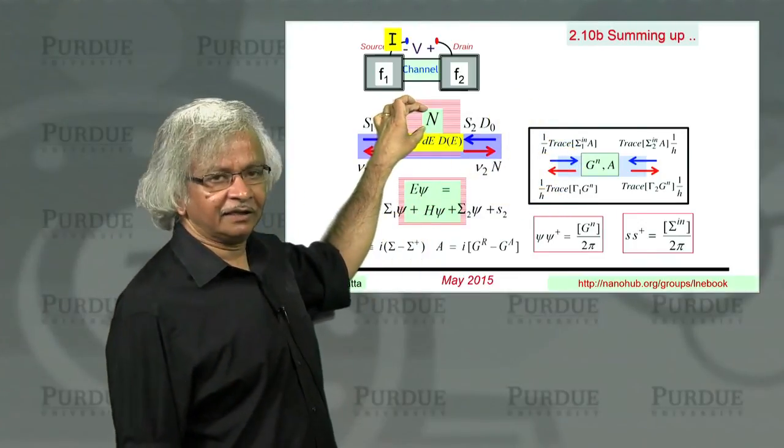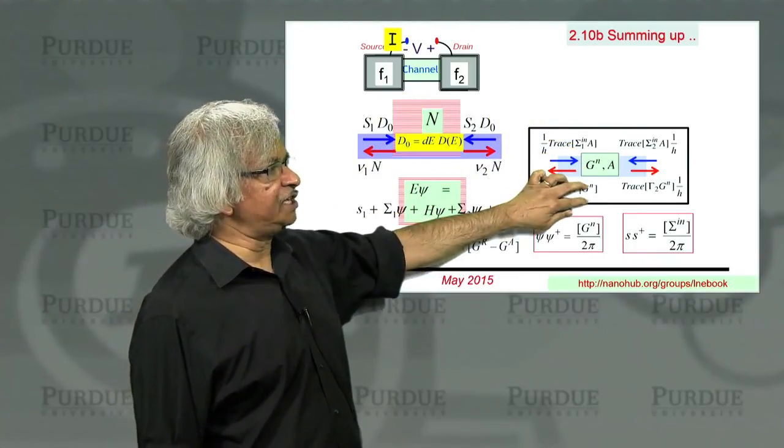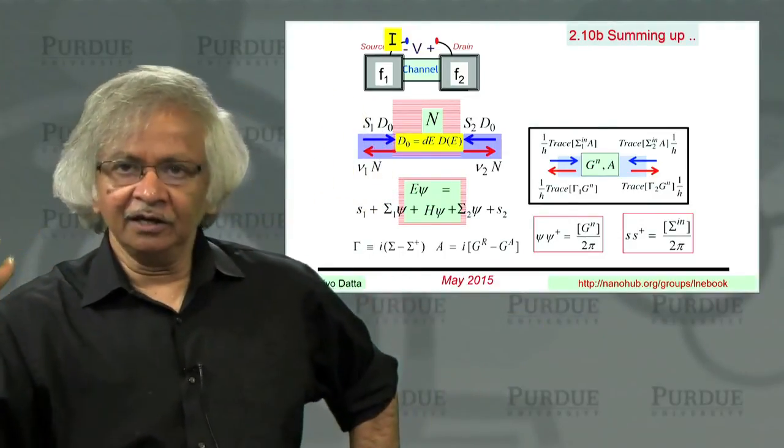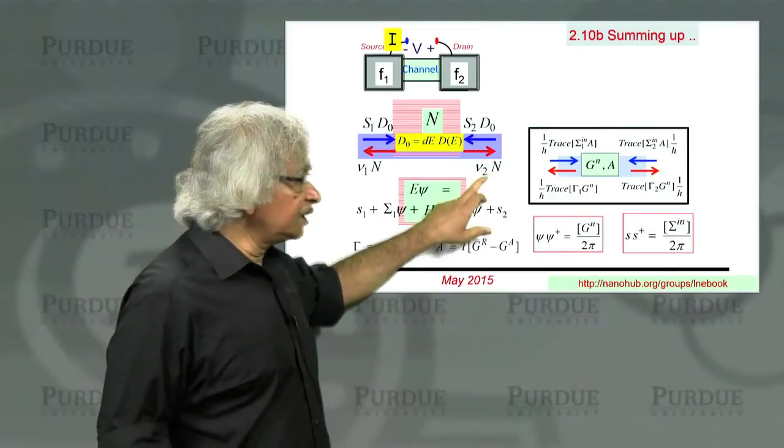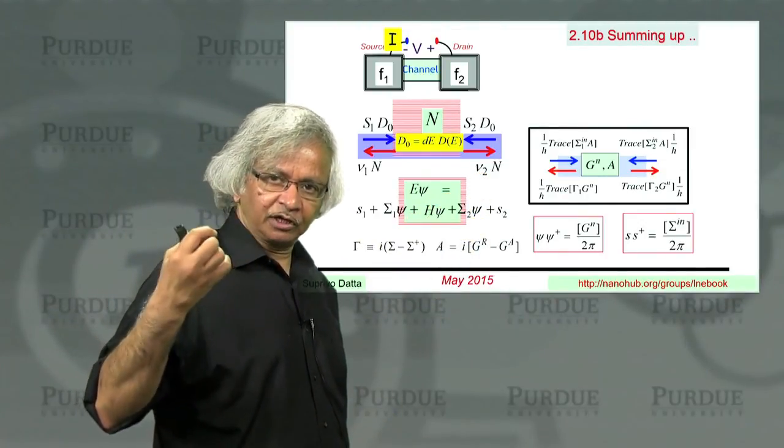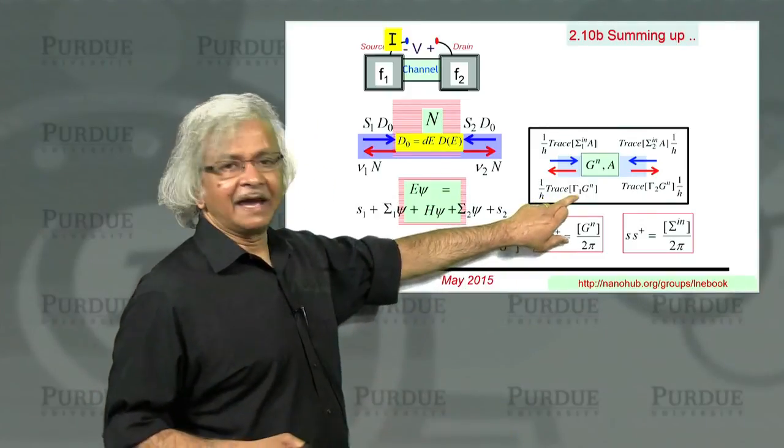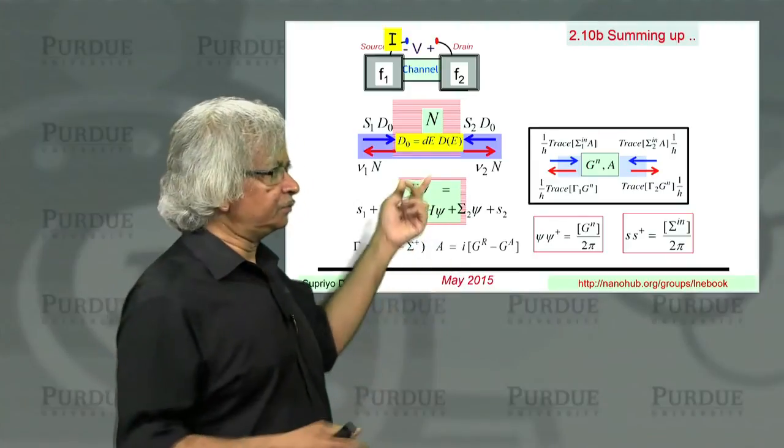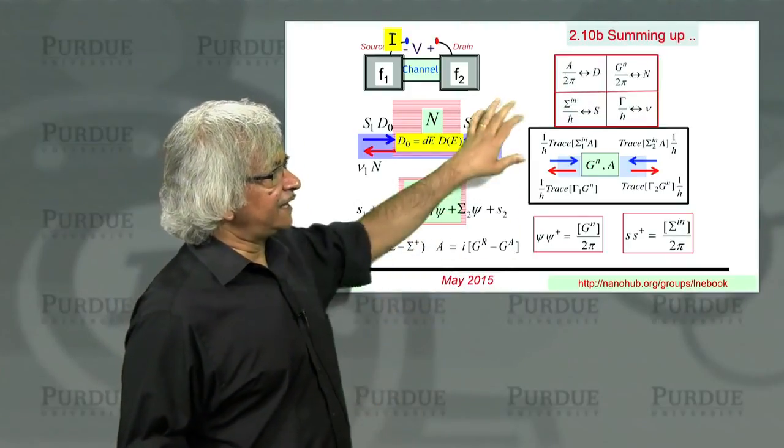Here we had N electrons. Here you have a GN matrix, and if you take the trace of that matrix, you would get the number of electrons. Similarly, you have this nu, which tells you the rate at which electrons leak out into the contact. Here there's a gamma matrix divided by H. That's like the nu.